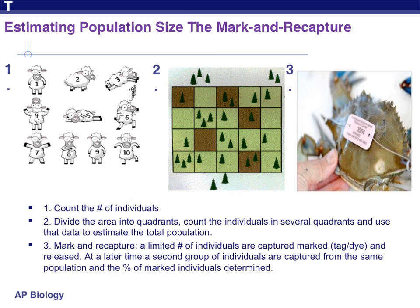Method two is what we call the quadrant method. You take the area that this population lives in and divide it into quadrants — you make a grid. Then you choose a couple of squares in the grid and count all of the individuals in that particular quadrant. You use that data to estimate the total population. You're not counting every single individual — you're counting a couple of them, and then based on the area and how many quadrants you have, you make an estimation. It's not a precise science, but it normally gets fairly close, especially if you're looking for a ballpark figure.